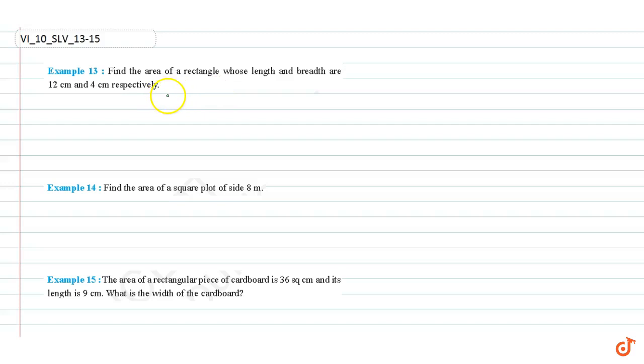In this video we are going to solve Examples 13, 14, and 15. Example 13: Find the area of a rectangle whose length and breadth are 12 centimeters and 4 centimeters respectively. We know that area of a rectangle equals length times breadth.